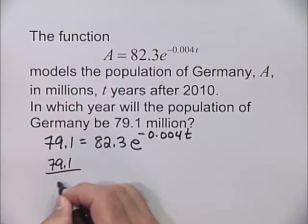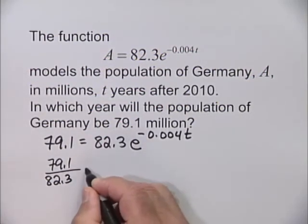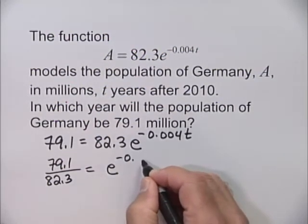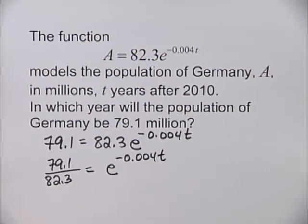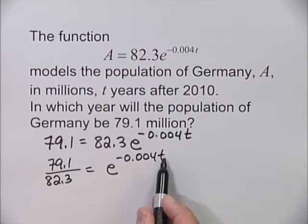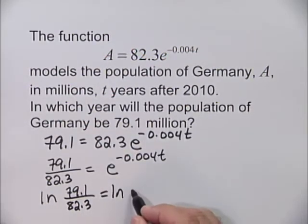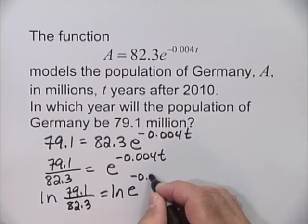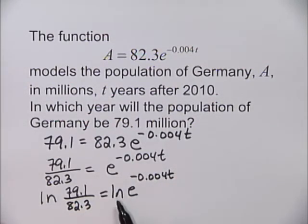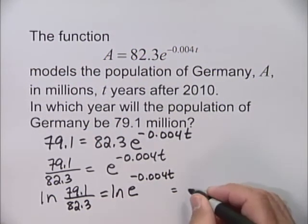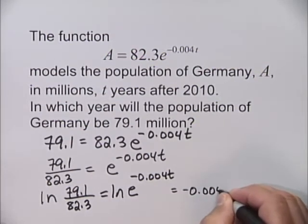We have 79.1 divided by 82.3 equals e^(-0.004t). We're solving for t, which is in the exponent, so we need to take the natural log of each side. This equals negative 0.004t.